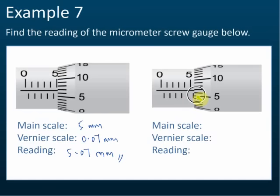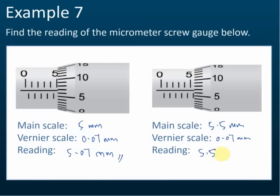How about this second one — what is the main scale reading? It is 5.5mm, correct. And the thimble scale reading is still 0.07mm. Therefore the reading is 5.57mm.